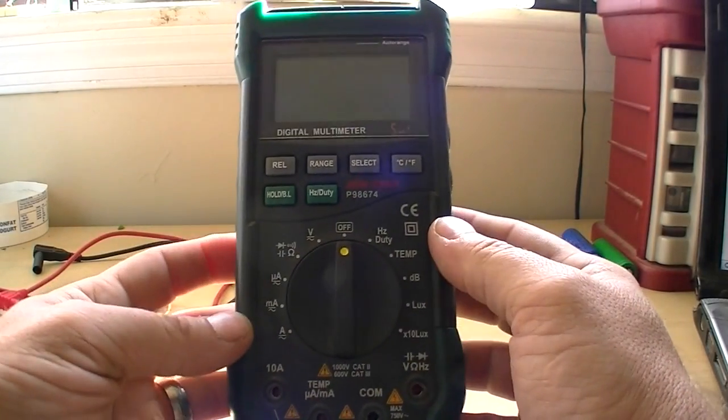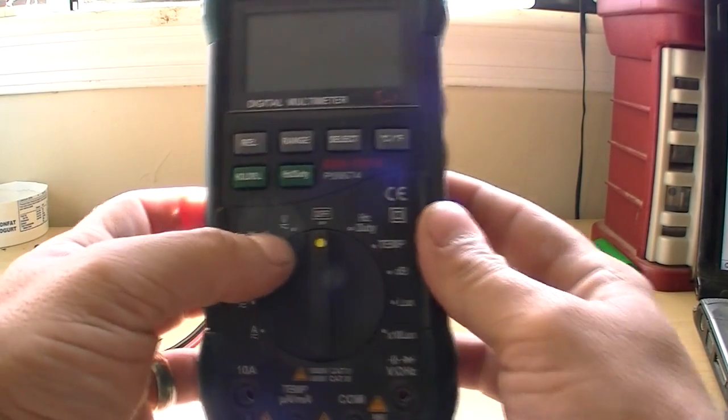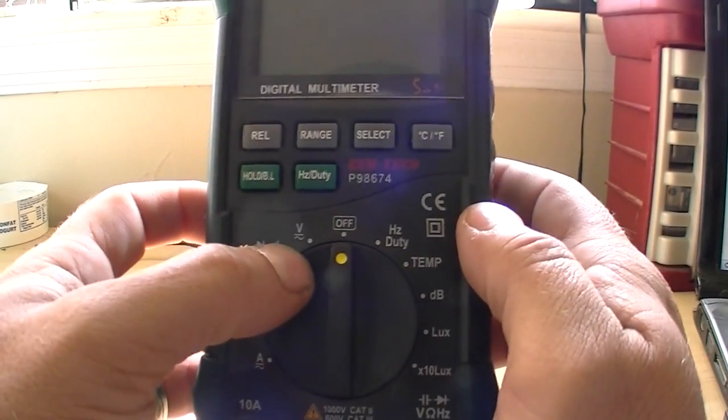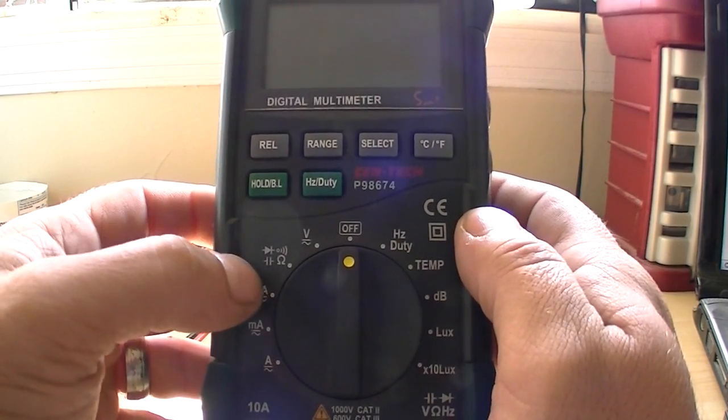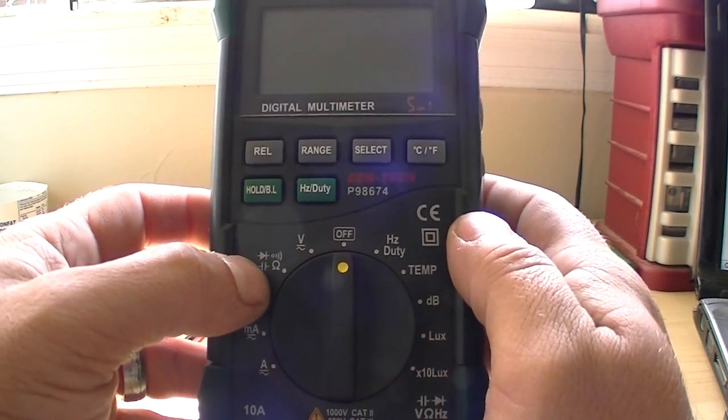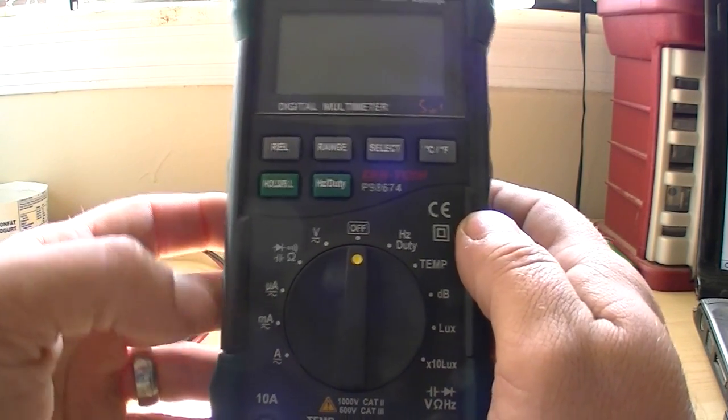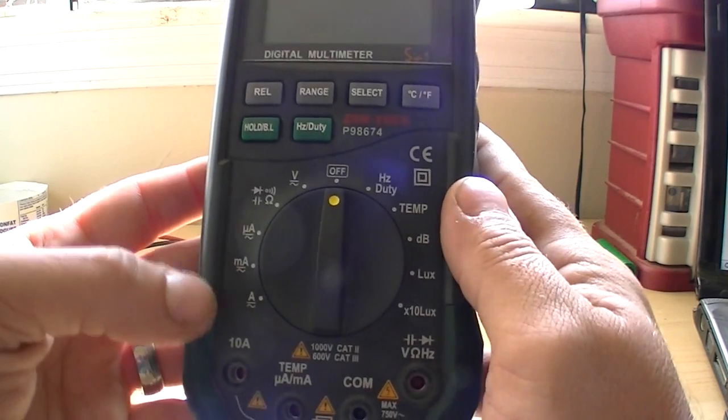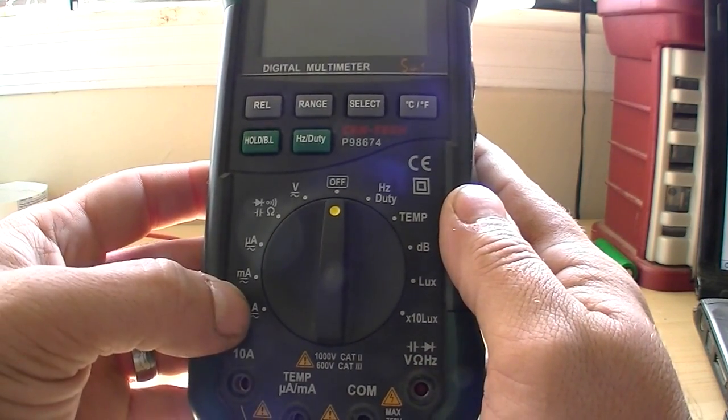Let's take a visual look of what it has on here first. Of course it has your voltage settings, voltage readings, your diode, your continuity, your capacitor testing, and your ohm reading testing section. Your microamps, milliamps, and amps.